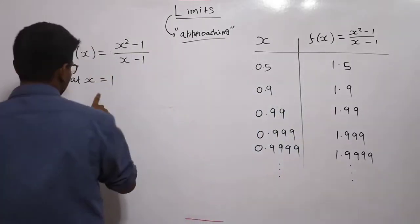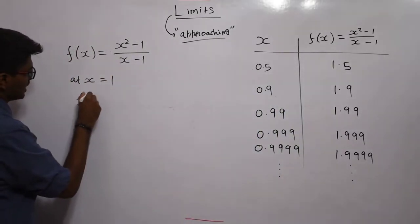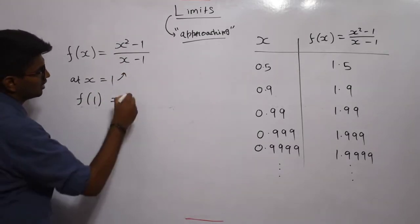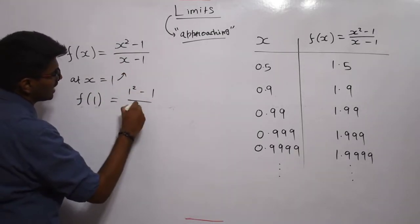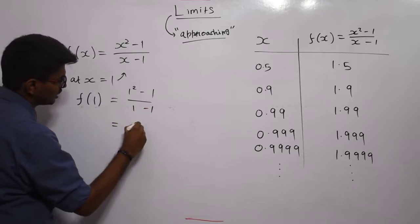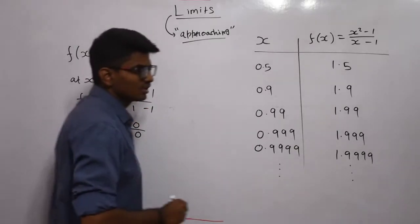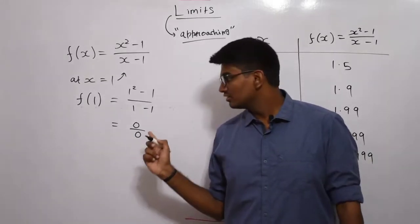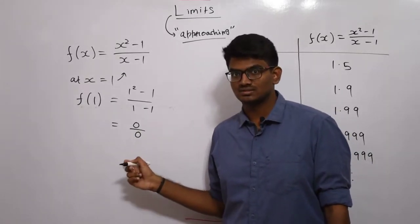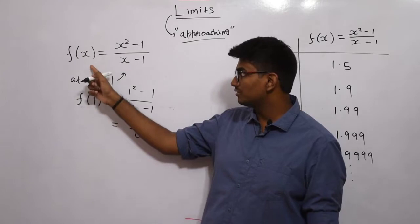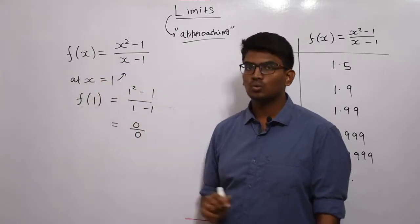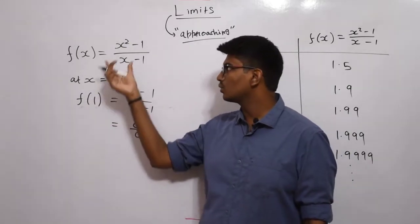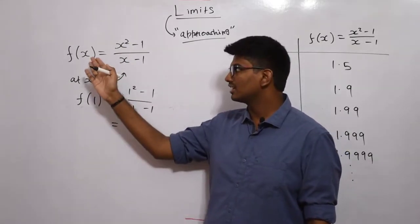If I substitute x=1 here, my f(1) — wherever x is there, I need to substitute 1. So 1 squared minus 1 divided by 1 minus 1, which is equal to 0 by 0, which is obviously undefined — indeterminate — we don't know what the value is. We cannot find the value of f(x) when x is equal to 1. We cannot find it directly by substituting x=1.